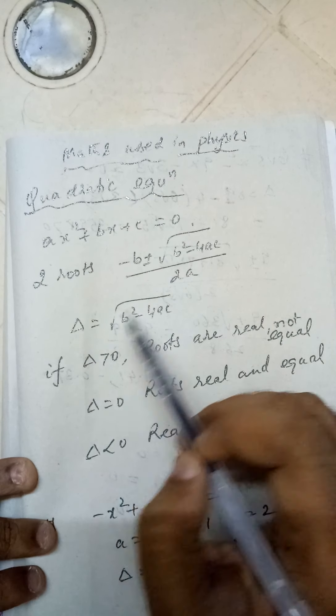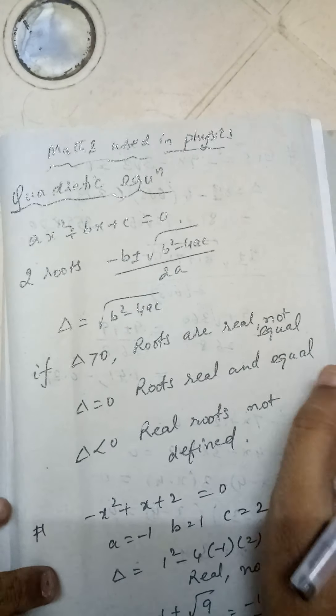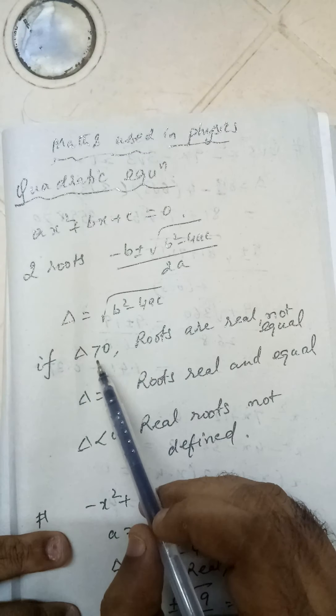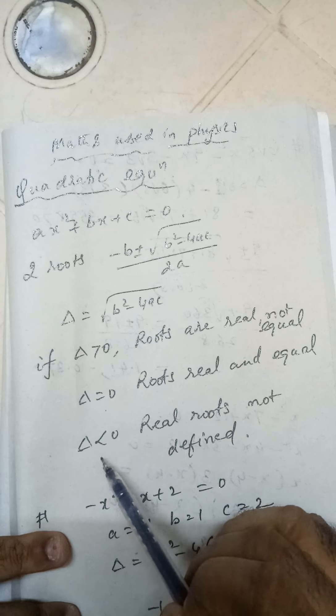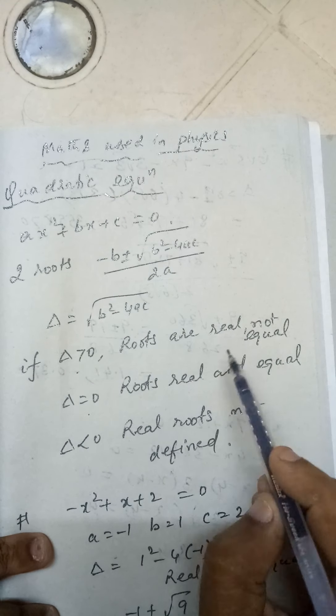There are three possible cases: Δ can be greater than 0, equal to 0, or less than 0. When Δ > 0, the roots are real and they are not equal - both the roots will not be equal to each other.